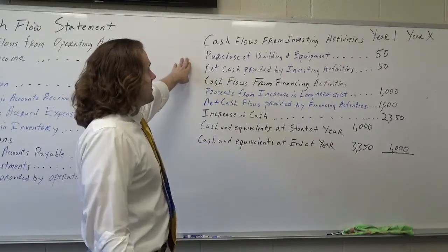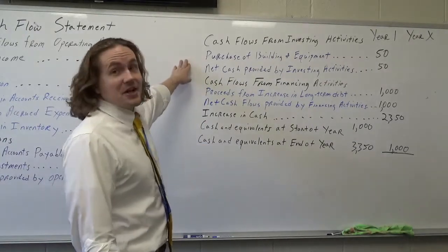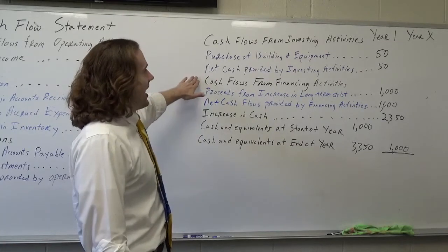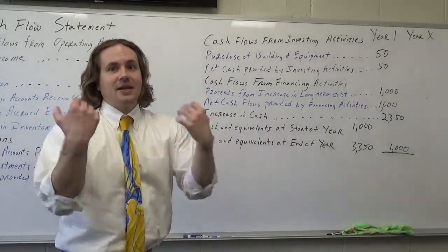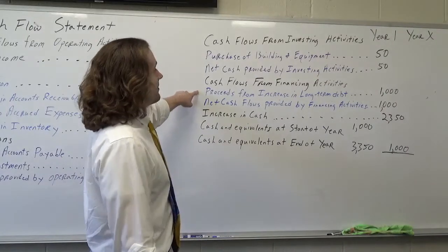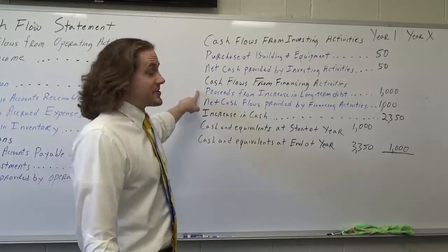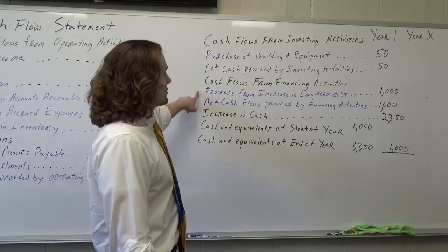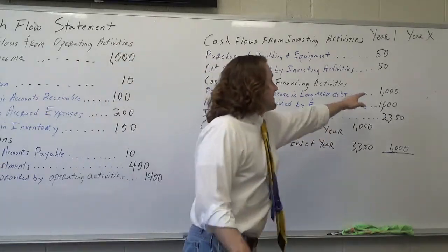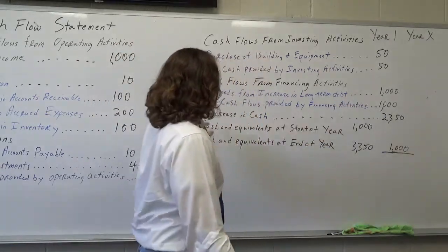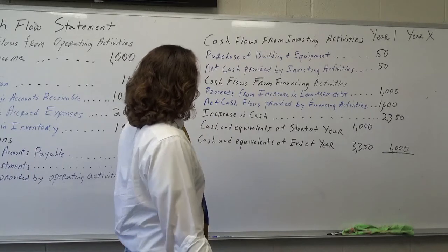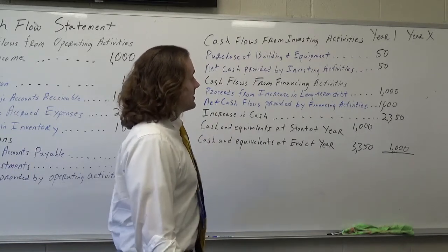Same setup as last time: purple stuff is a subtraction, blue stuff is an addition. Cash flows from financing activities — I'm getting loans. Let's say I decide I need a full loan of a thousand dollars. That's a proceed, an increase in long-term debt of a thousand dollars. Then I have my net cash flows provided by financing activities.